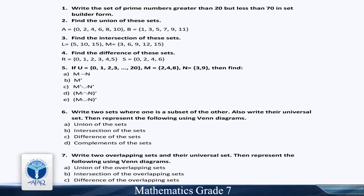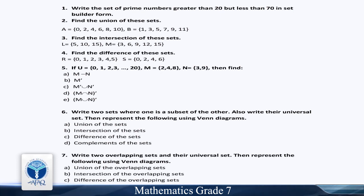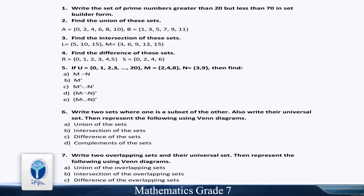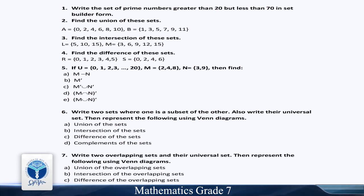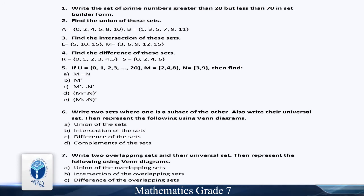If U = {0, 1, 2, 3, ..., 20}, M = {2, 4, 8}, and N = {3, 9}, then find: Part A: M minus N. Part B: M complement. Part C: M complement union N complement. Part D: (M intersection N) complement and (M union N) complement. Write two sets where one is a subset of the other, also write their universal set, then represent using Venn Diagrams: union, intersection, difference, and complements of sets.